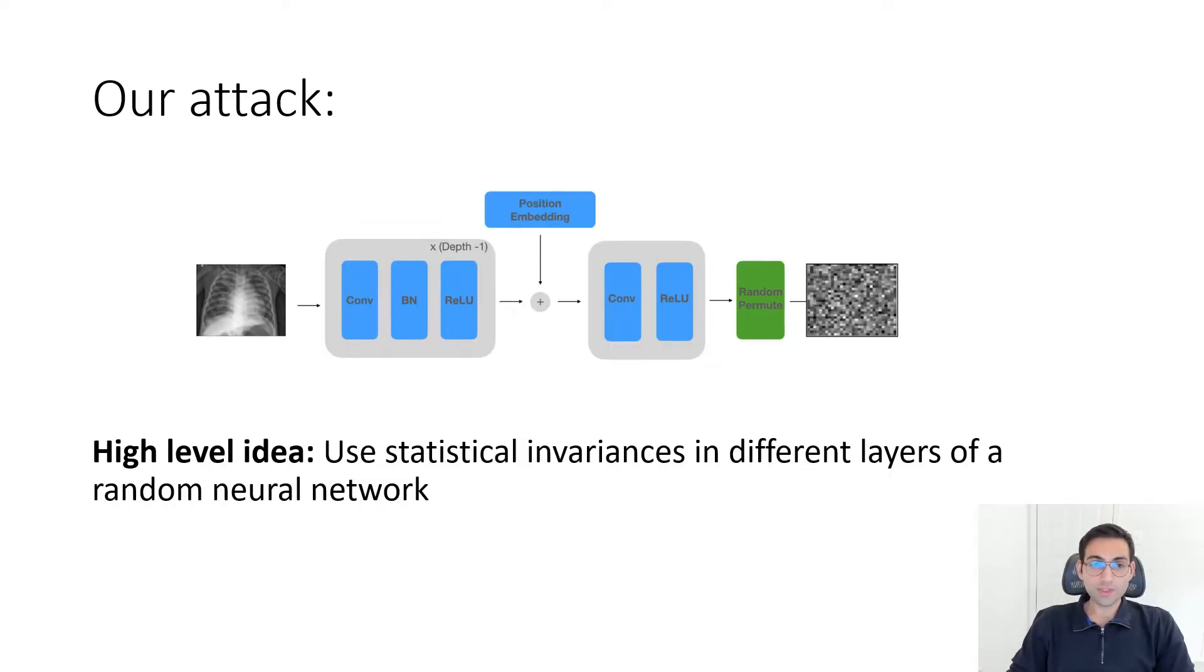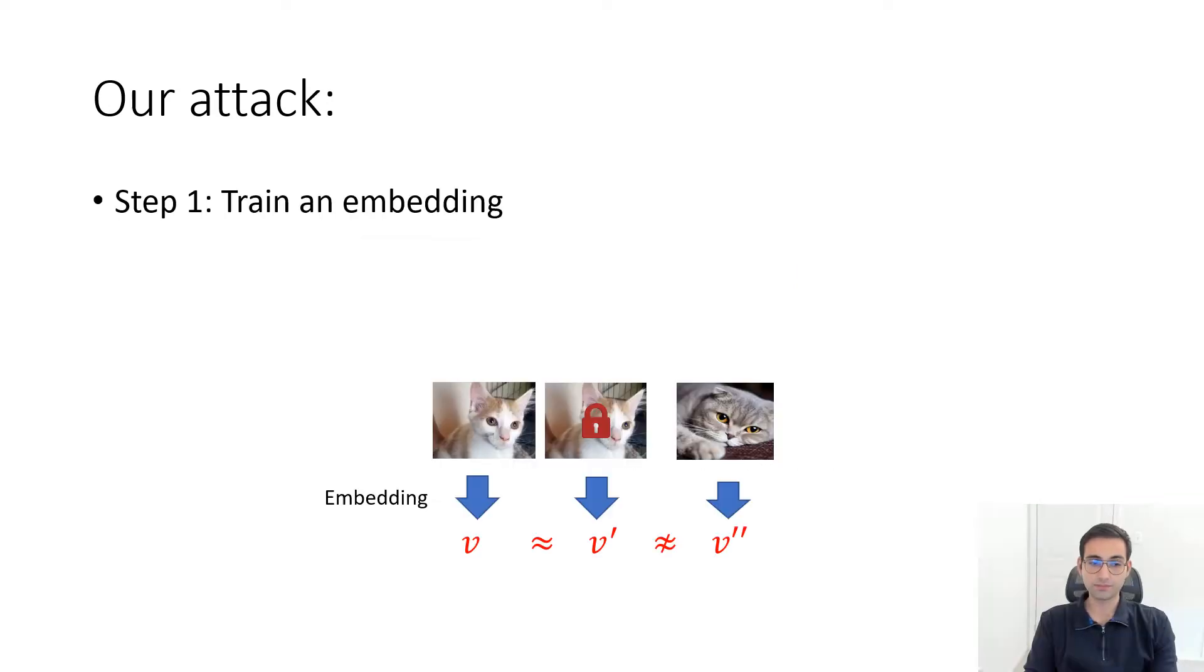How does our attack work? The high level idea is that when you instantiate a random neural network, you would expect some statistical invariance in different layers of this neural network. You would expect some statistics to be preserved between the input and the output of your random neural network, and we want to use that in our benefit.